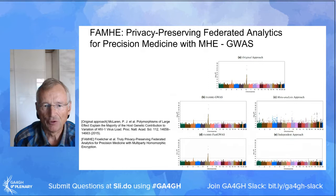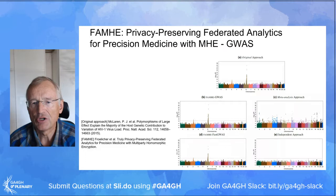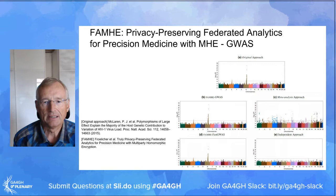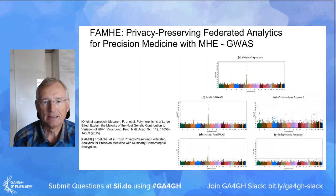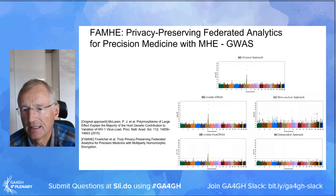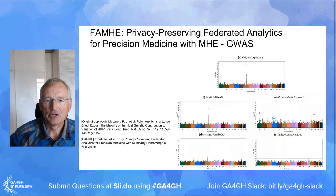On the next slide we show similar results, in this case with full GWAS. On panel A is the original approach. Panel B shows the Manhattan plot is exactly the same when computations are carried out on decentralized data under encryption. Whereas panel C shows that if computations are done independently at each place and then averaged, this leads essentially to nowhere.